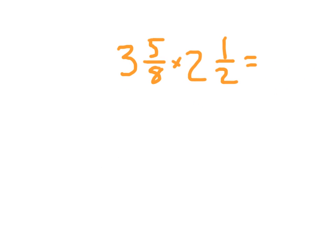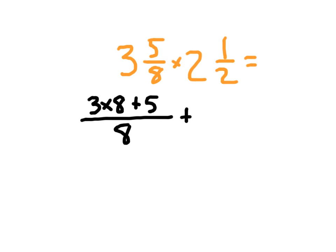Now I have two mixed numbers to go ahead and multiply. In order to multiply these mixed numbers together, what I end up doing is writing improper fractions for each of them. Three wholes is worth how many eighths — that's the first question I ask myself. Each whole is worth 8 eighths, so three wholes is worth 3 times 8 eighths. And we remember to add in our 5. For 2 and 1 half, each of those wholes is worth 2 halves, so 2 wholes is worth 4 halves. 4 halves put together with that other half — that's why it's 4 plus 1 halves.